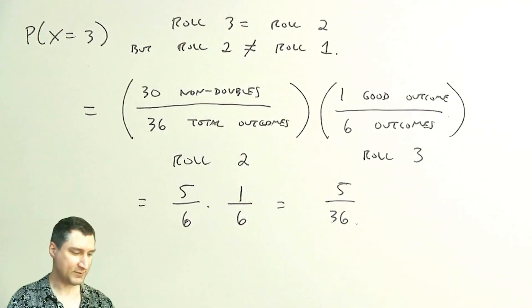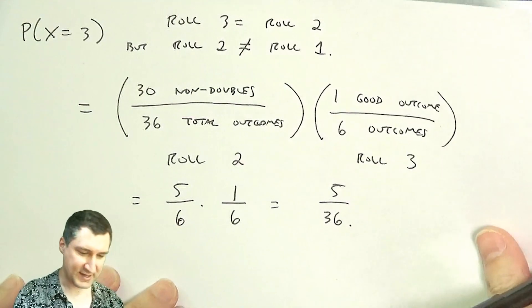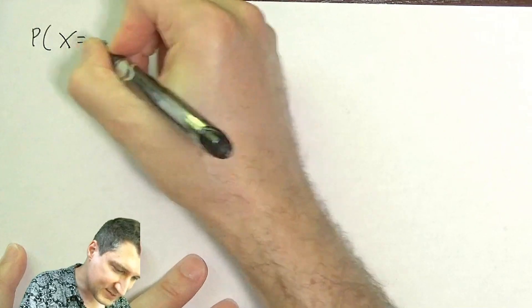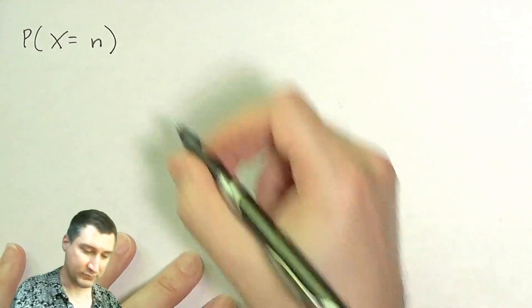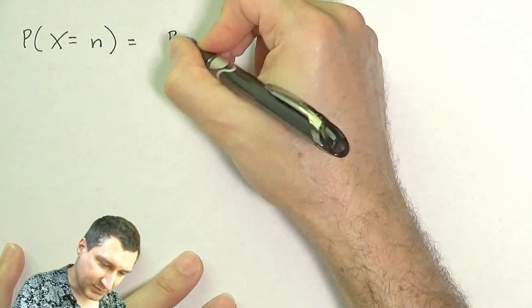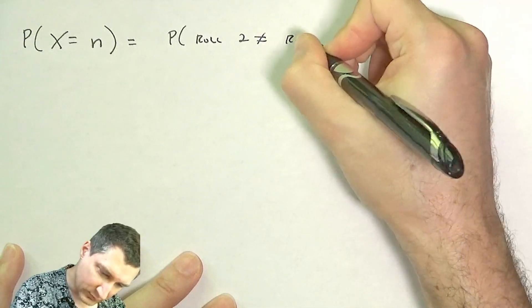So in general, what we can do is pull this all together to say: what is the probability that X is equal to some number n? Well, that's like saying the probability that roll 2 was not equal to roll 1 times the probability that roll 3 was not equal to roll 2...